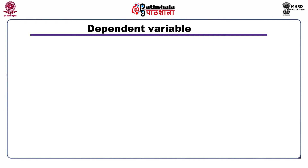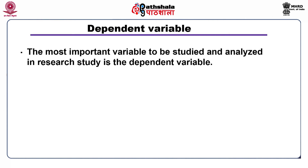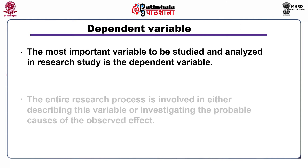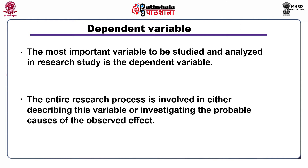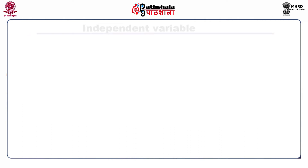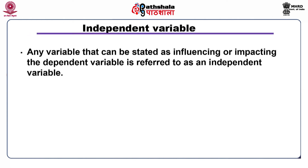The dependent variable is the most important variable to be studied and analyzed in a research study. The entire research process is involved in either describing this variable or investigating the probable causes of the observed effect. Any variable that can be stated as influencing or impacting the dependent variable is referred to as an independent variable. The proposed relations are then tested through various research designs.